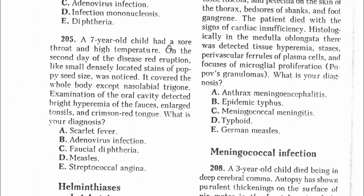Question 205: A 7-year-old child had a sore throat and high temperature. On the second day, a red eruption of small, densely located stains of poppy seed size was noticed covering the whole body except the nasolabial triangle. Examination of the oral cavity detected bright hyperemia of the pharynx, enlarged tonsils, and a crimson red tongue. During the first few days of scarlet fever, it manifests as catarrhal tonsillitis with involvement of the oral mucosa and tongue. The answer is scarlet fever — A.